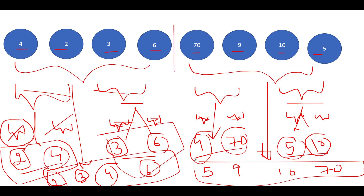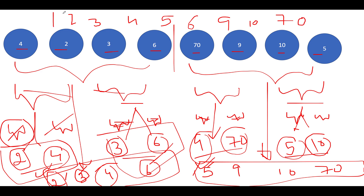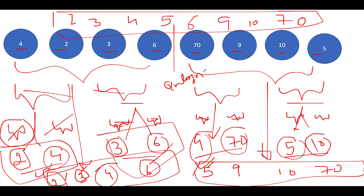In the final step, we merge the two sorted halves [2, 3, 4, 6] and [5, 9, 10, 70] to get the fully sorted array: 2, 3, 4, 5, 6, 9, 10, 70. The time complexity for each merging operation is O(n), and since we break into parts of two at each level, the overall time complexity becomes O(n log n).